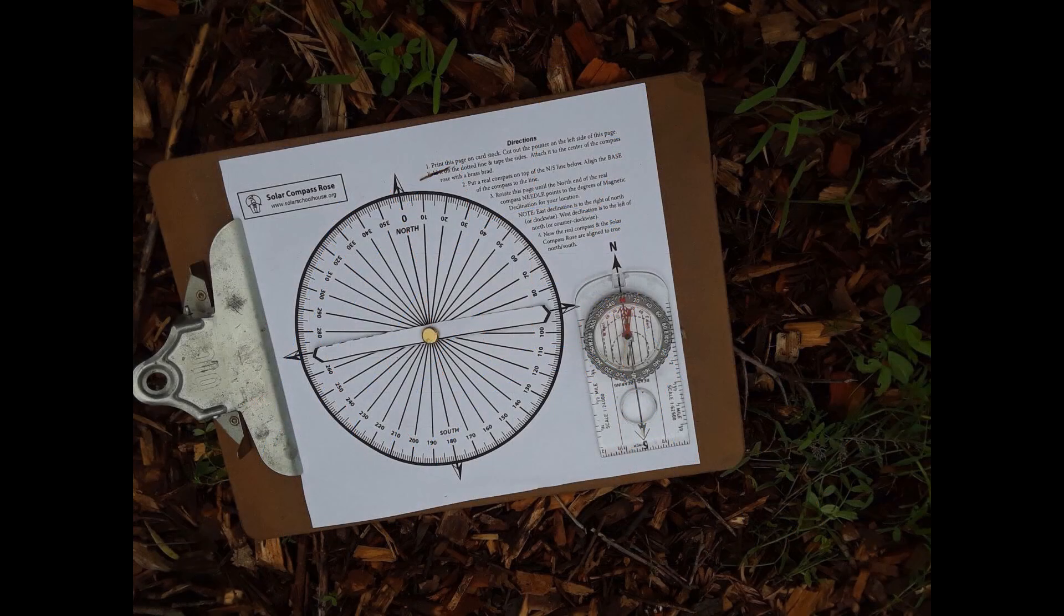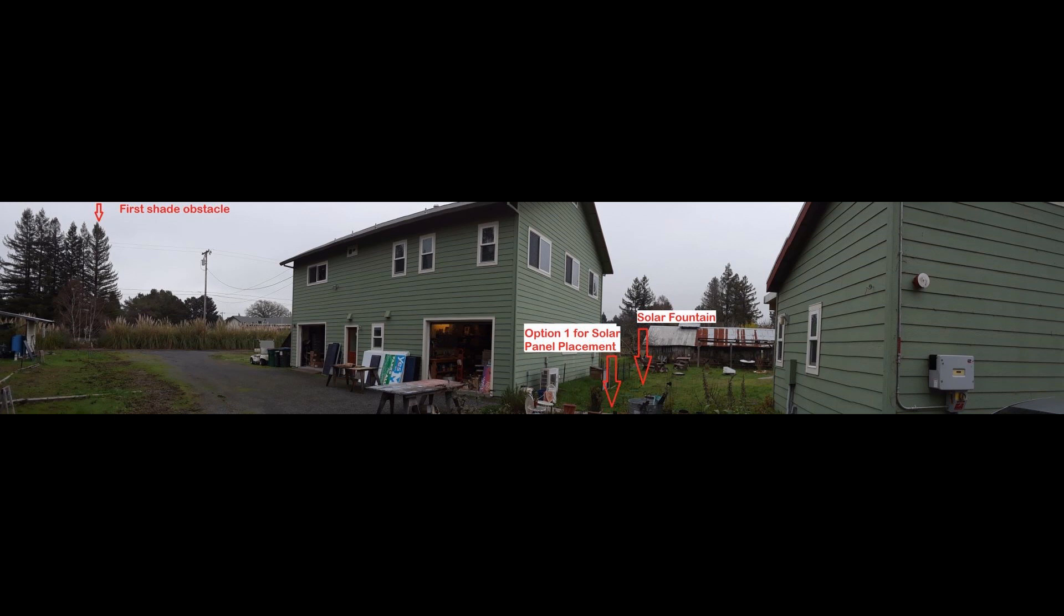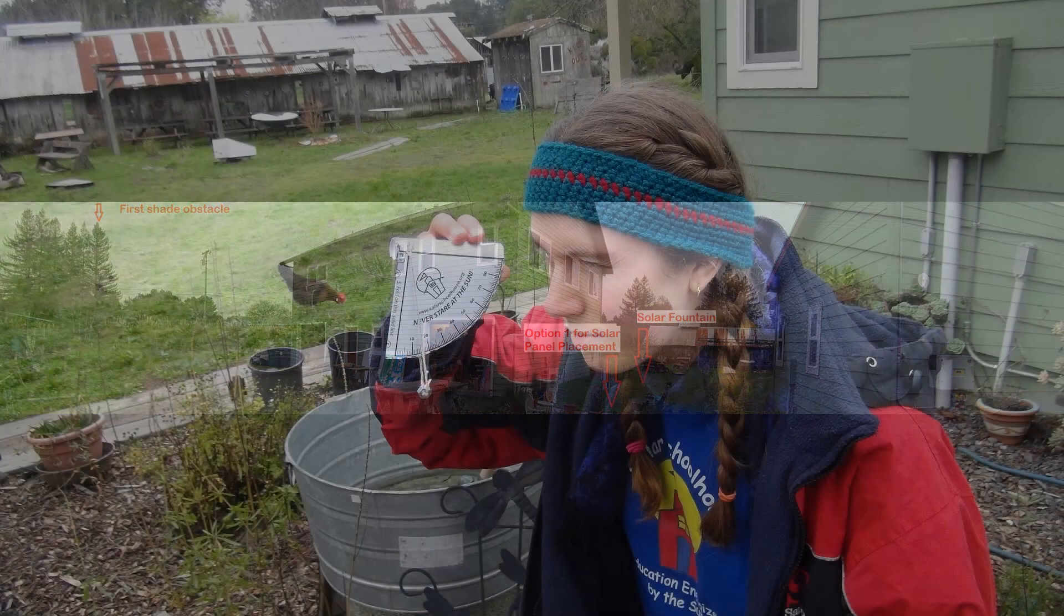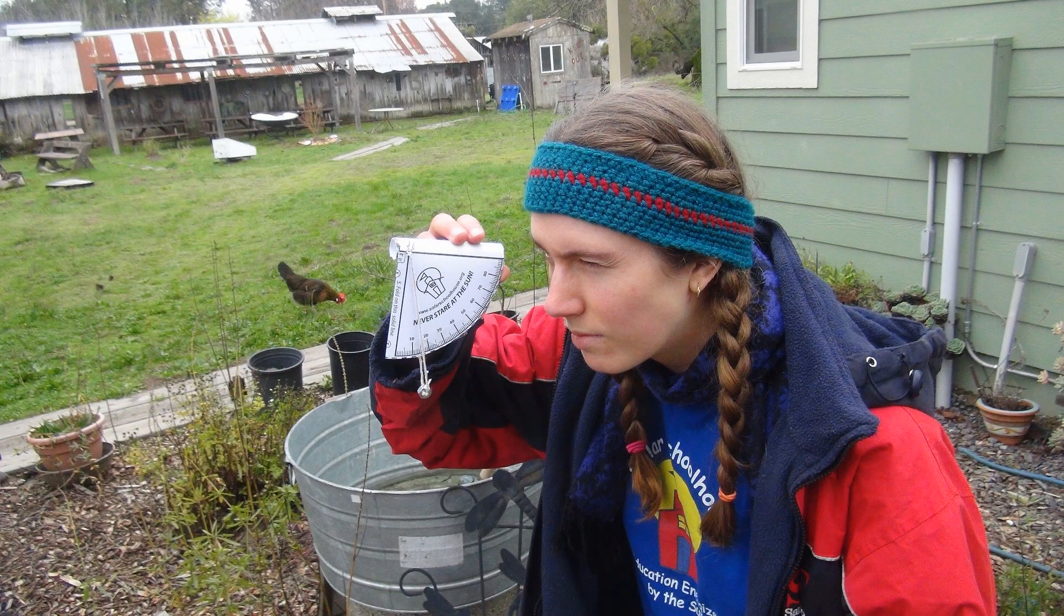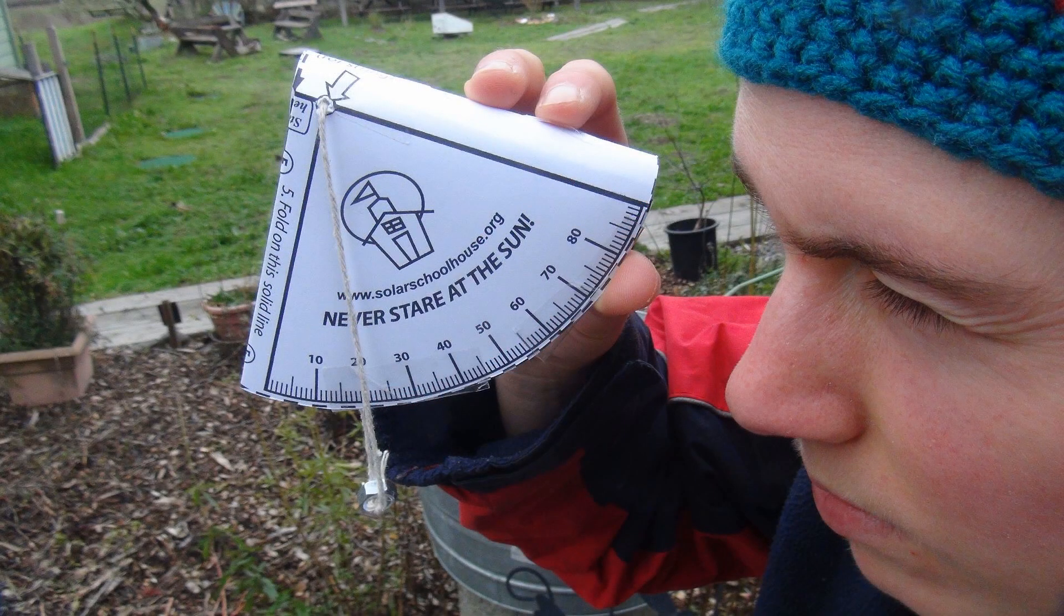Point the solar compass rose due east. This is 90 degrees. Now measure the height of the tallest tree or building in this direction that might shade the panel. It is important to measure from the proposed height of the solar panel. For example, if we plan to mount the solar panel on a pole at about shoulder height, we will measure the height of the shading obstacles from shoulder height instead of eye level. To measure the obstacle height, hold the sun angle quadrant over the solar compass rose and point the quadrant's tube in the same direction as the compass needle.